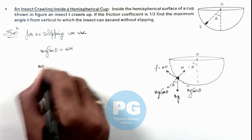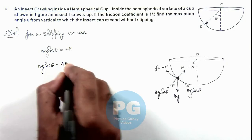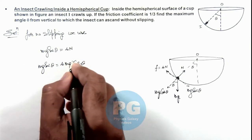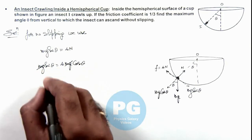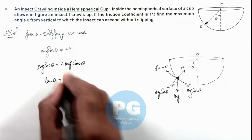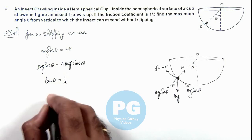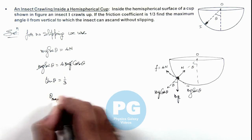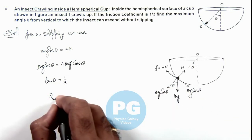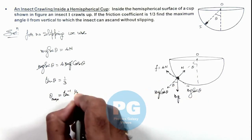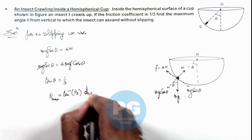So here, mg gets cancelled out and the value of tan theta we are getting is μ, which is given as 1/3. Therefore, the maximum theta up to which the insect can crawl up is equal to tan inverse of 1/3. That will be the result of this problem.